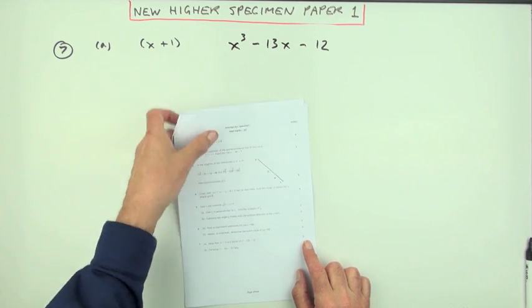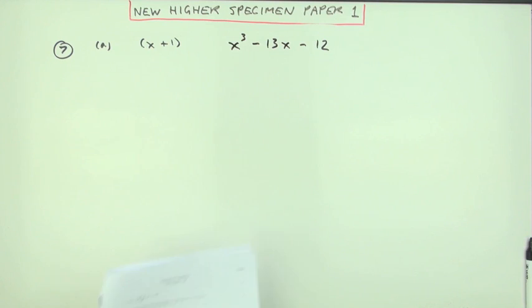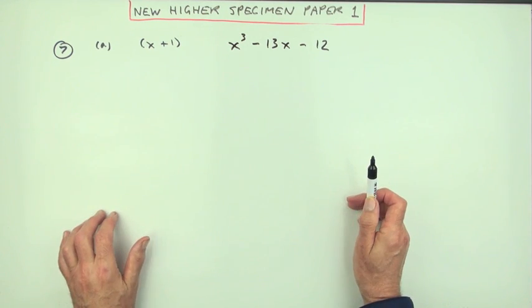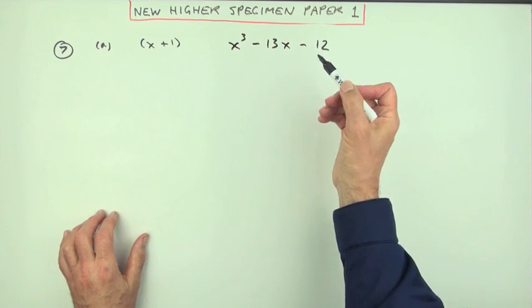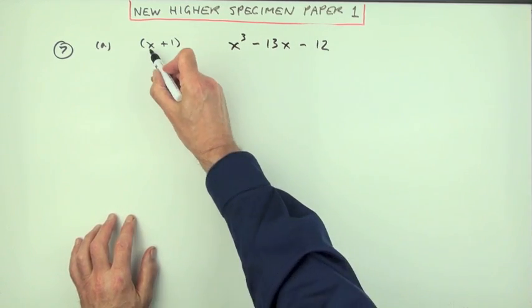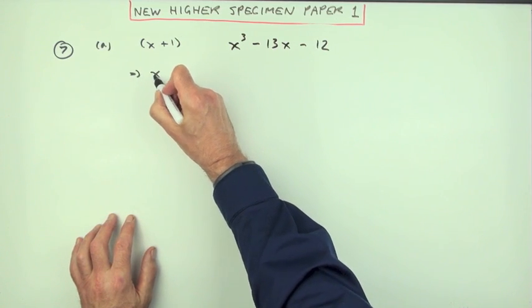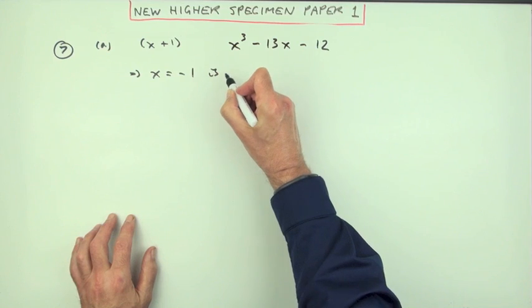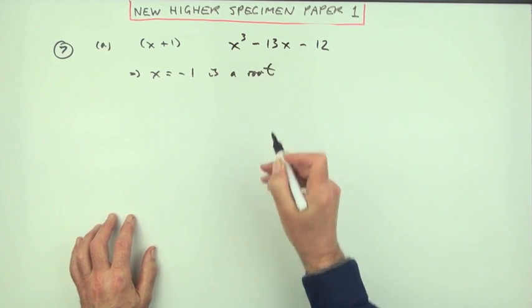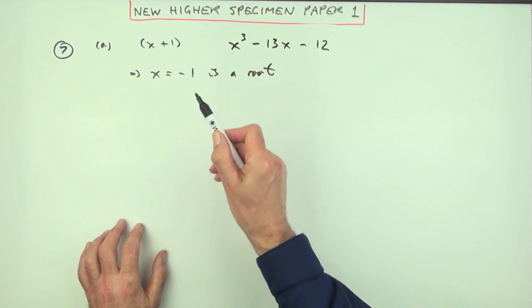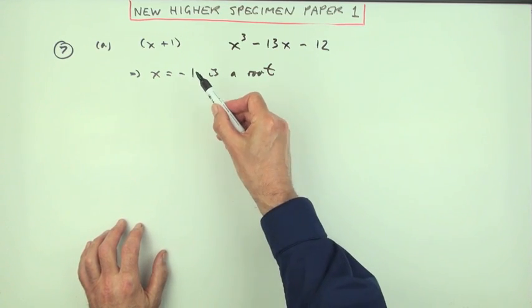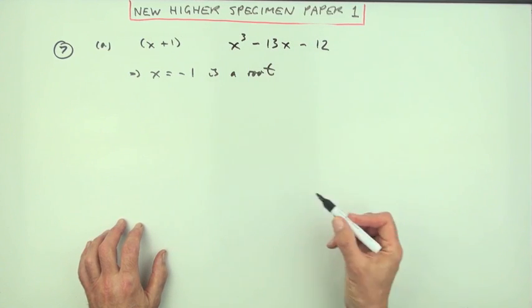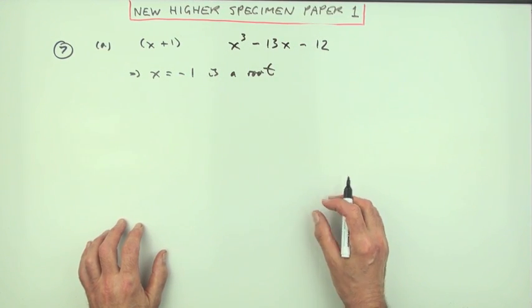For three marks, show that x plus one is a factor of this. Now there are several ways to do that. One way would be simply to say, well, x plus one as a factor means that x equals negative one is a root. And then test if it is a root. And that simply means if you put it into this expression, the expression should come to zero.